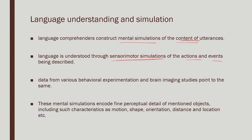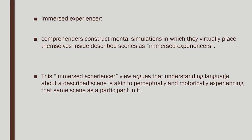Mental simulation is not a homogenous entity; it has various finer nuances. Some of these finer perceptual details include motion, shape, orientation, distance, and location. When you simulate an event or even a simple object, that object may have its orientation and shape; similarly, it has a location — close or far — and such aspects of the scene. These are the finer aspects of a particular scenario that have been looked at through various experimental paradigms.